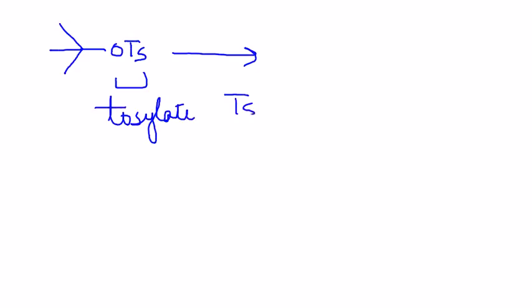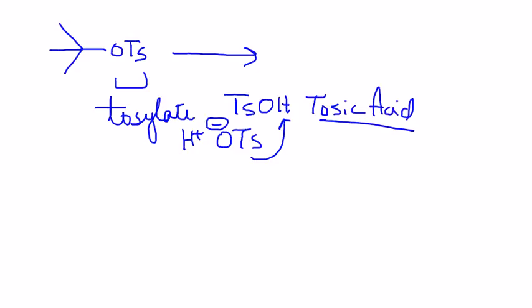I now have a case where I have what this group is called a tosylate, and that comes from tosic acid. That means if OTs leaves with a negative sign and you add a proton to that, you will get tosic acid. The name itself should suggest that tosylate is a good leaving group. And I'm going to treat that with water. And we are going to keep it room temperature.